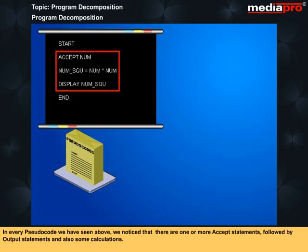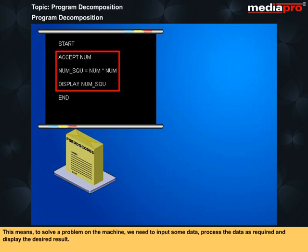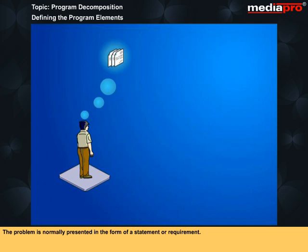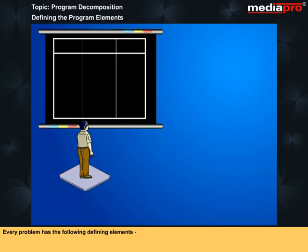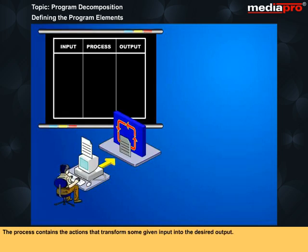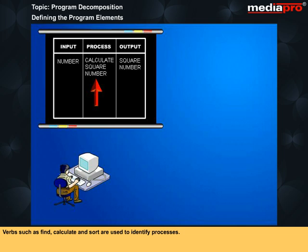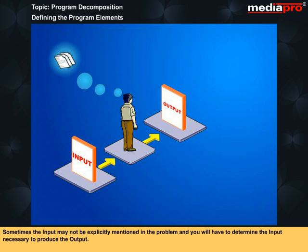In every pseudocode we have seen, we notice that there are one or more accept statements followed by output statements and also some calculations. This means to solve a problem on the machine, we need to input some data, process the data as required and display the desired result. You must understand the problem before you can write an algorithm as a solution to it. The problem is normally presented in the form of a statement or requirement. Every problem has the following defining element: Input, process and output. The process contains the actions that transform some given input into the desired output.